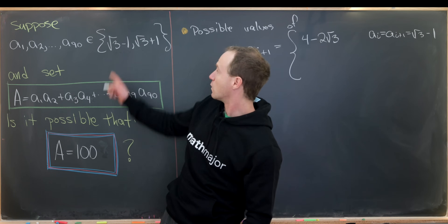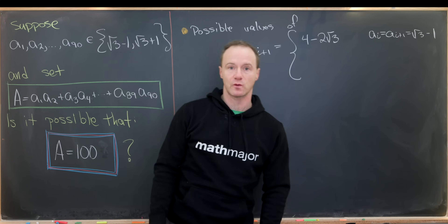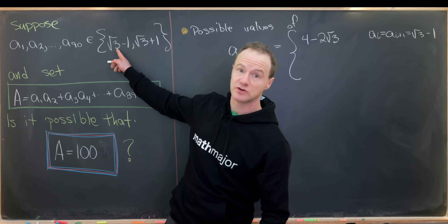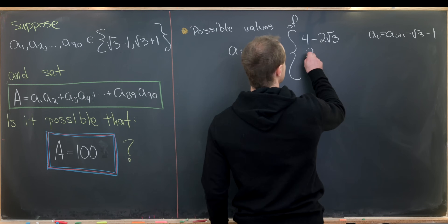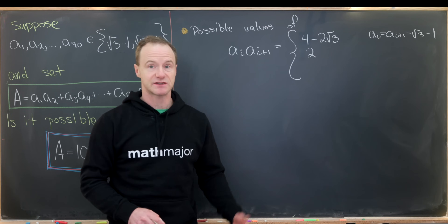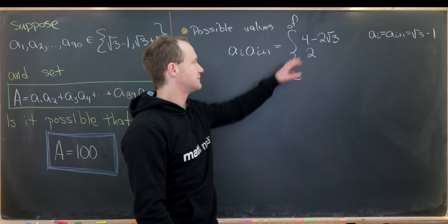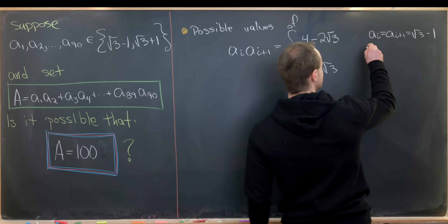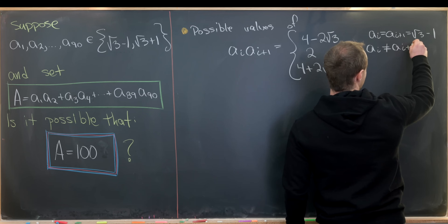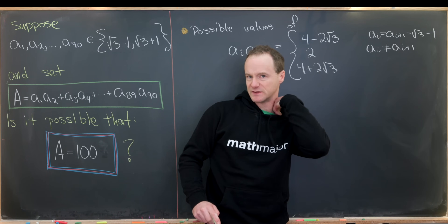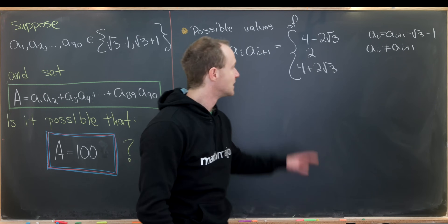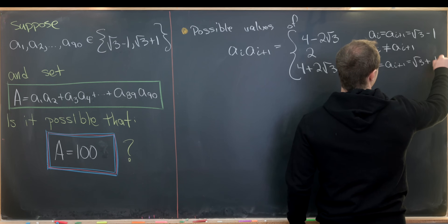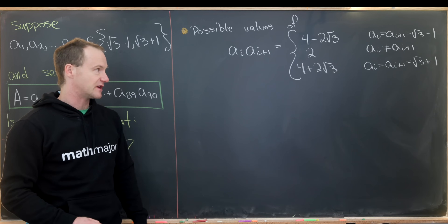The second case is when one of them is √3 minus 1 and the other is √3 plus 1 — that's like a difference of squares, giving (√3)² minus 1² equals 2. Finally, when both equal √3 plus 1, we get (√3 + 1)² = 4 plus 2 times the square root of 3. So those are our three possible values.